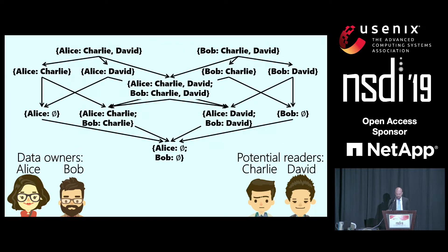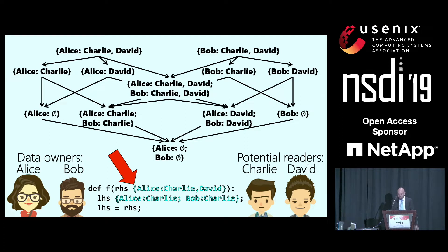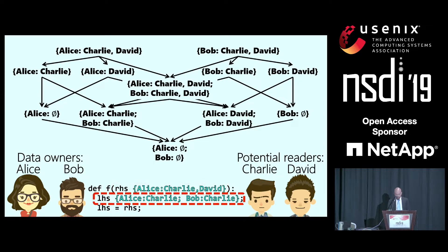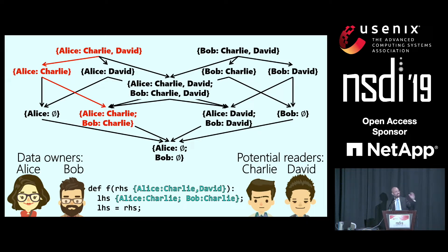You can visualize this notion of restrictiveness using a lattice. At the top are the least restrictive labels, and at the bottom are the most restrictive labels. IFC only allows label changes that move downward through the lattice, restricting data disclosure. For example, a function parameter with a single owner Alice and allowable readers Charlie and David — if the left-hand side has owners Alice and Bob who both allow data to flow to Charlie, that assignment is allowable because it decreases the number of people who can read the value. There's been a variety of work on enforcing IFC statically by a compiler or dynamically by a runtime system.